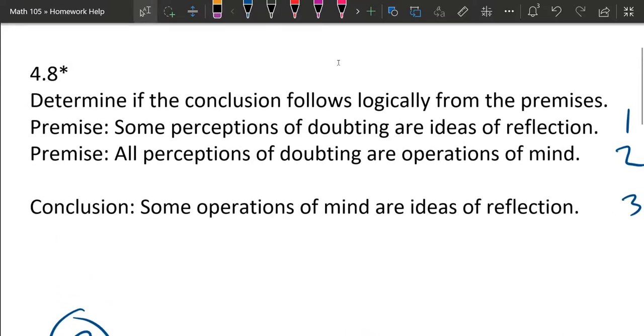We're about to look at this logic question here. We have a premise and a second premise and a conclusion. We're trying to see if the conclusion is necessarily true given these two premises. So I've labeled premise one and premise two, a little one and two over here on the right.